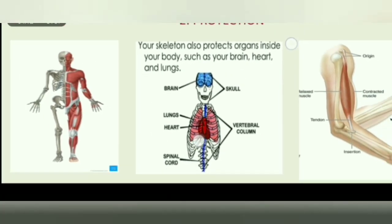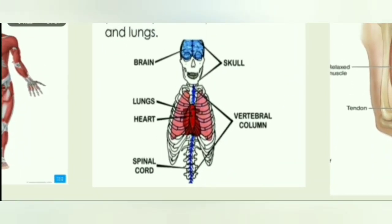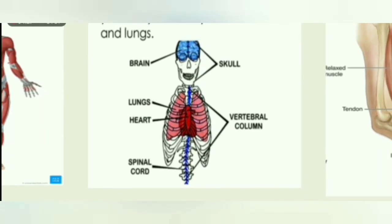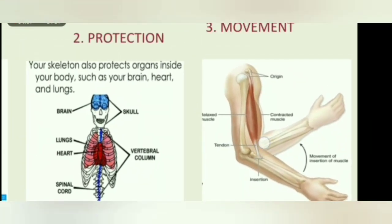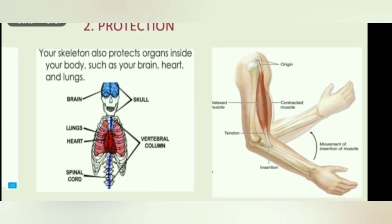The second function is protection: the skeleton protects delicate internal organs. For example, the skull protects the brain, the ribs protect the lungs and heart, and the vertebral column protects the spinal cord. The third function is movement: most skeletons are composed of rigid materials providing a means of attachment for muscles. Tendons attach muscles to the skeletal system, and parts of the skeleton operate as levers which muscles can pull on.